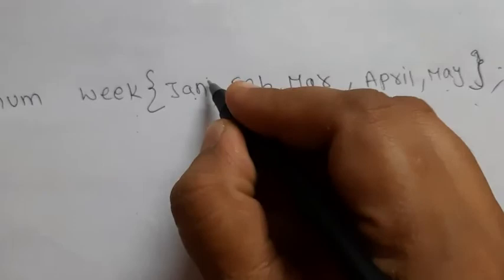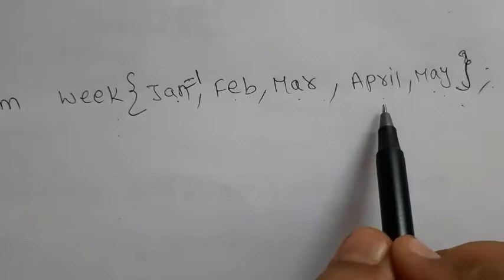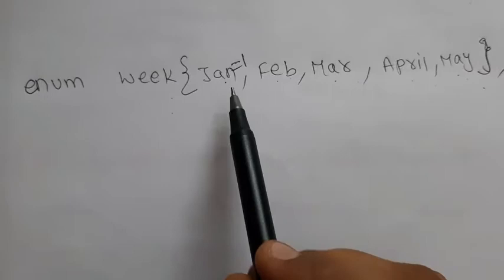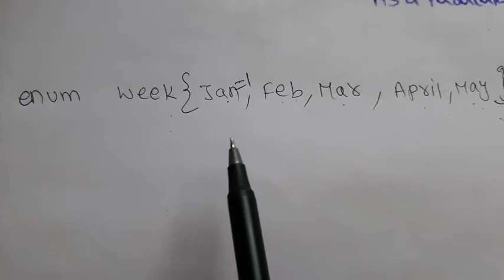Generally, January should start at 1, not 0. So we assign jan = 1, making february = 2, march = 3, april = 4, may = 5. You can make any changes by assigning custom values. We can make a program to print January through May, and we can also use a switch statement: if I enter 1, print January; if 2, print February.